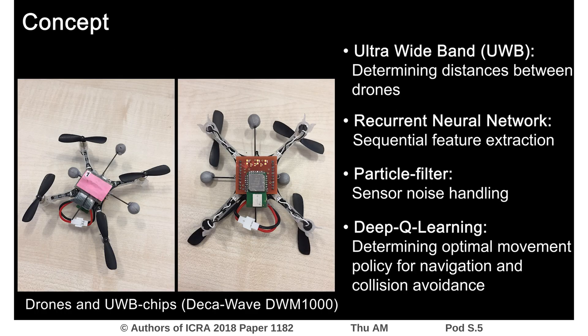The system presented in this paper uses ultra-wideband distance calculation in combination with additional velocity measurements to determine the relative position of other drones or target positions.